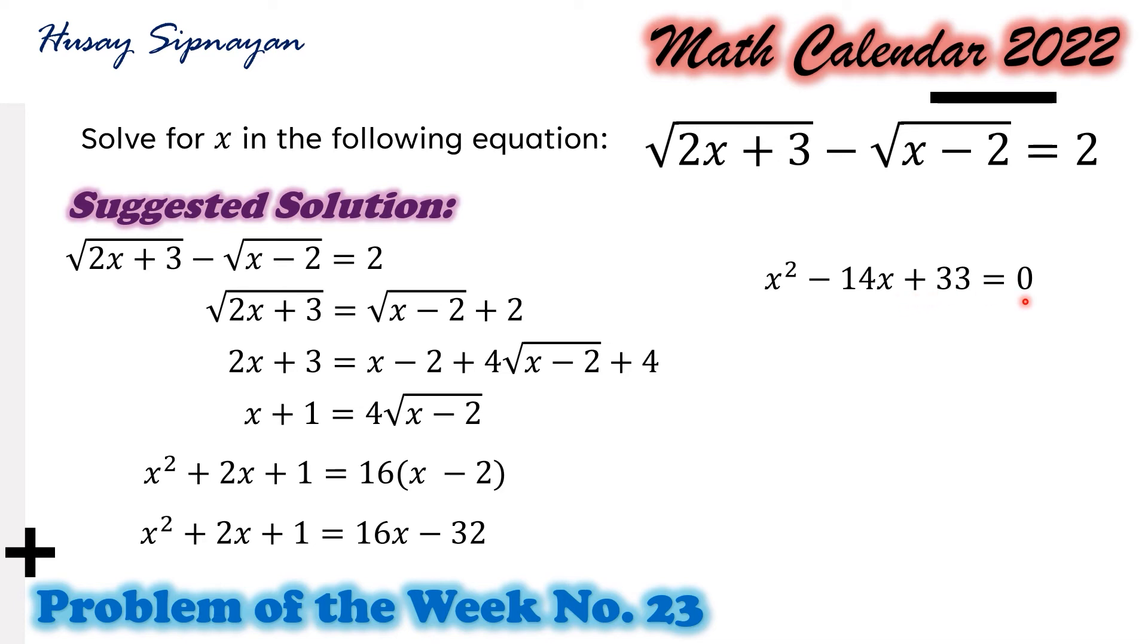Next, we're going to solve this resulting quadratic equation by factoring, so we have x minus 11 times x minus 3 equals 0. To get the solution to this quadratic equation, we equate both factors to 0, and we get the value of x equals 3 or 11.